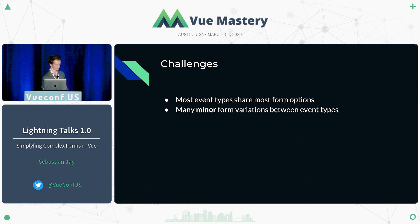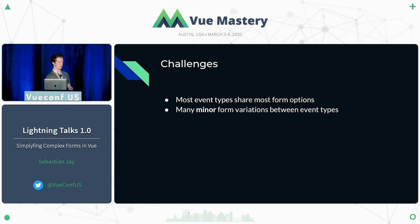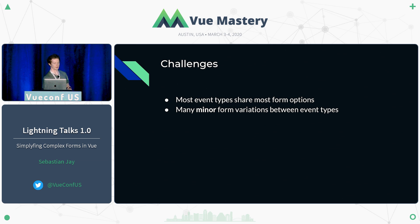The challenges here in building this form are that most event types share many form options — maybe they'll have a name, some scheduled range of dates, or whatever — but then there are many minor variations between the different event types. These details don't matter for some of the patterns I'm showing, but they are relevant for others.